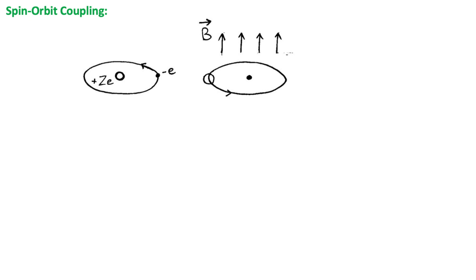This video is a brief description of the fine structure doubling of spectral lines, in which many spectral lines actually consist of two separate lines that are very close together. This arises from the magnetic interaction between the spin and the orbital angular momenta of the atomic electron, and it is known as spin-orbit coupling.